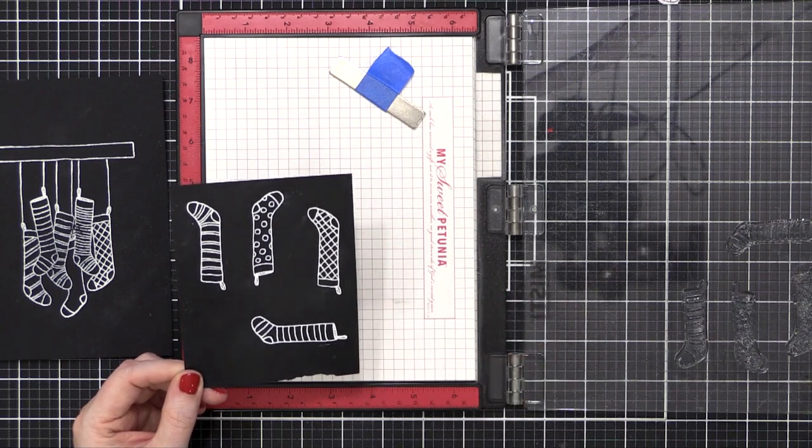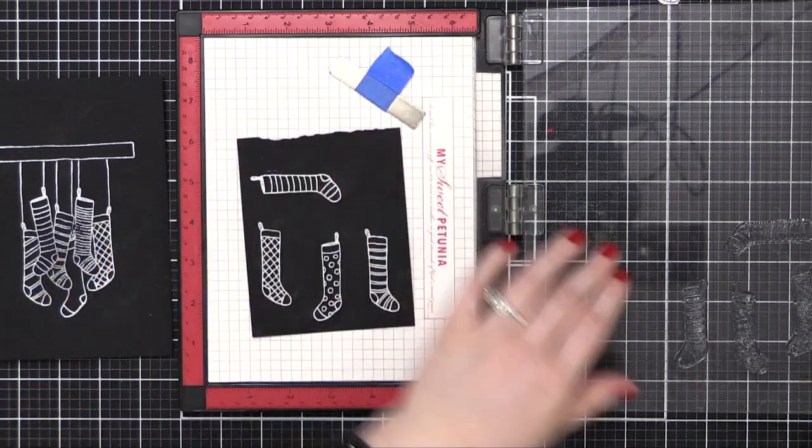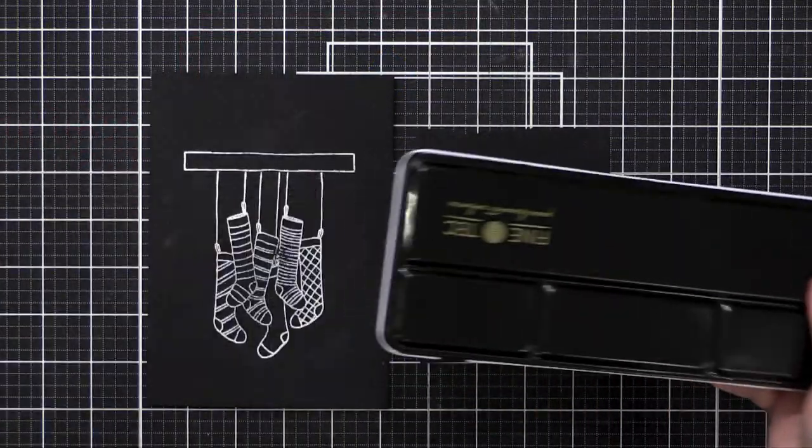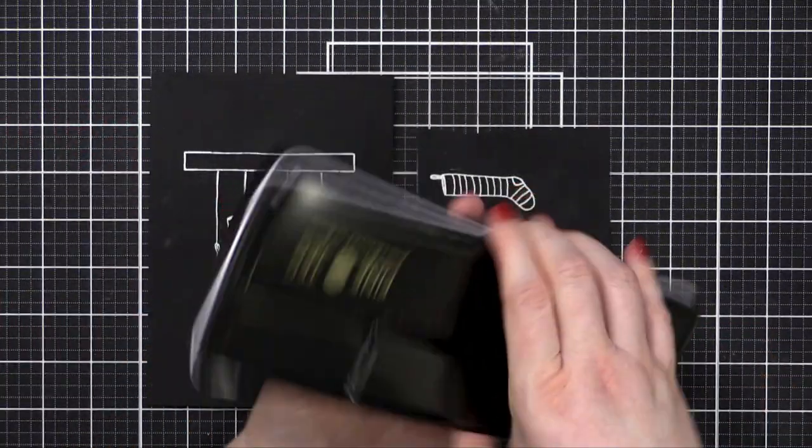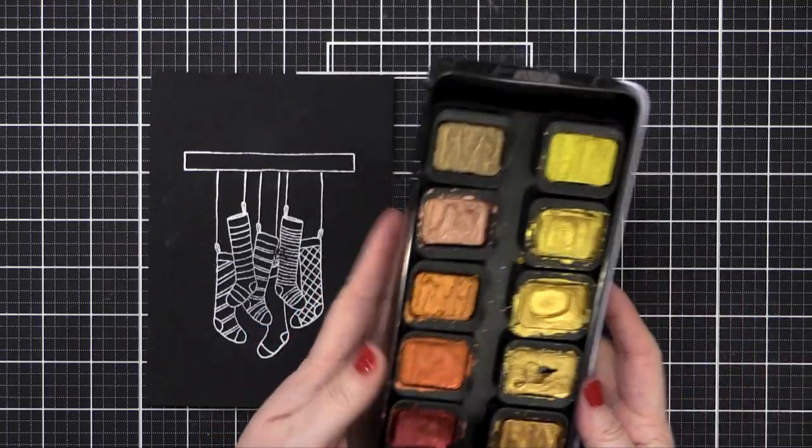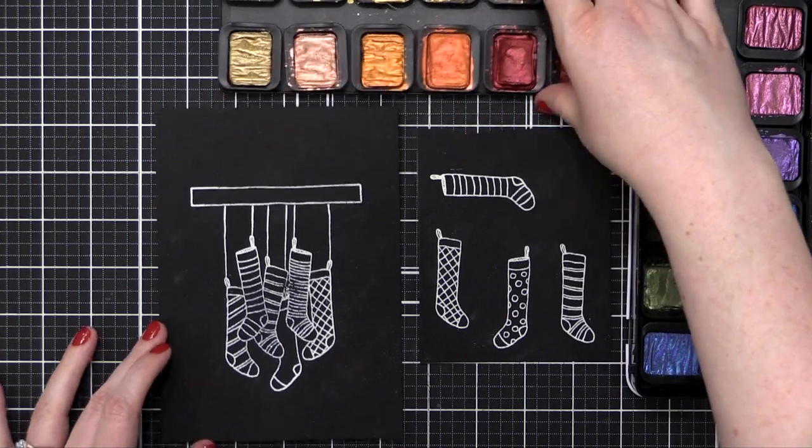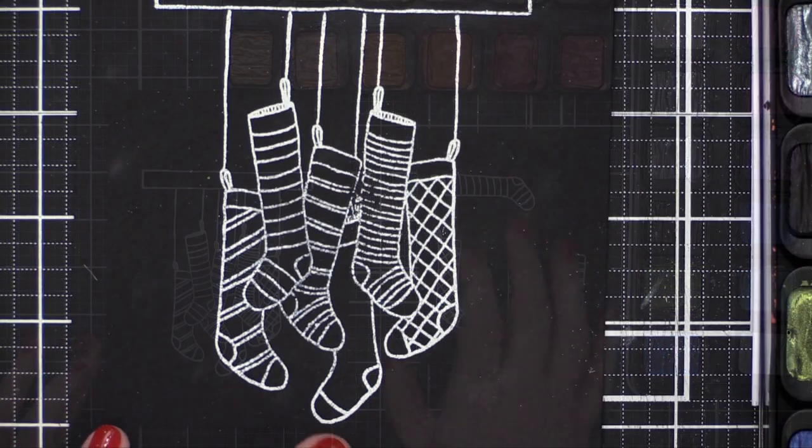Now I'm going to get into the painting. The paints I'm using today are actually from Finetec. This is their pearlescent color set of 24. My lid broke off so I'm just putting it underneath, and then I took out both trays of the colors. This is going to be a pretty colorful painting.